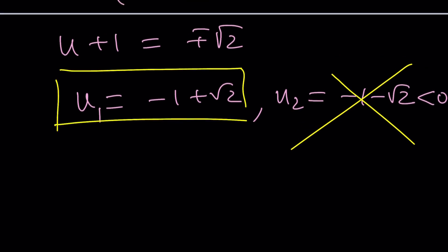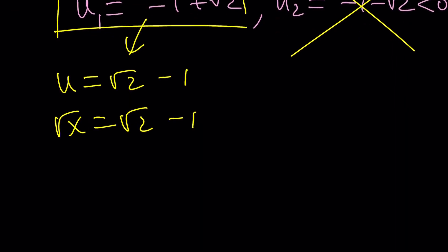But does it really work? Well, if u is equal to that, let's just write it as root 2 minus 1. And then that means square root of x is equal to root 2 minus 1. That looks good to me. And square both sides, you're going to get 3 minus 2 root 2. By the way, I'm going to go ahead and share the link to his video in the description down below and possibly maybe in a pinned comment as well.